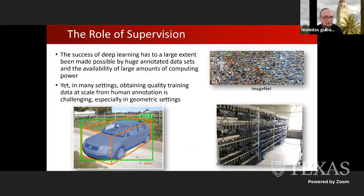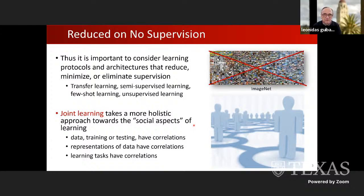If you want to estimate the pose of a car in terms of angles with some reference axis or planes, this is really very hard. That's why it's important to consider learning protocols and architectures that reduce, minimize, or eliminate supervision. There's been a tremendous amount of effort in this direction — transfer learning, semi-supervised learning, self-supervised learning, and so on. To add one more, what I and others call joint learning, that looks more at the social aspects of learning.